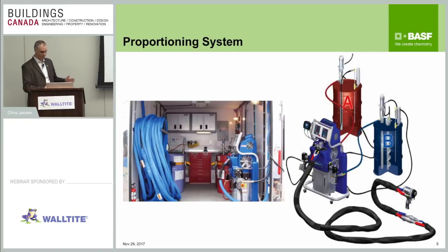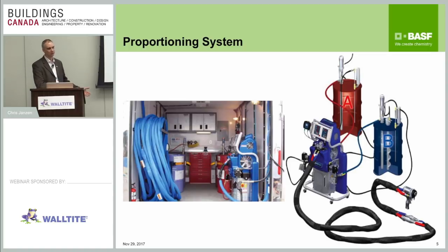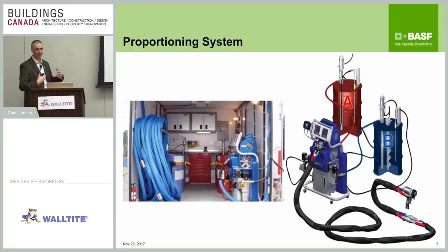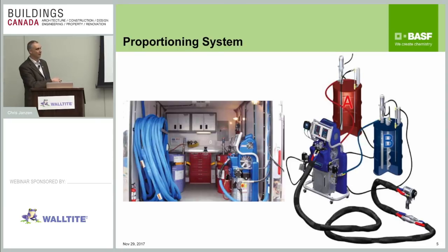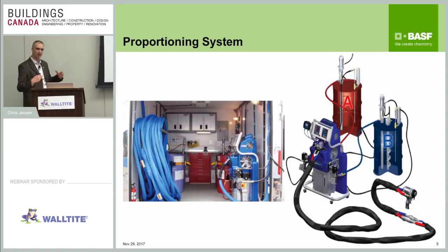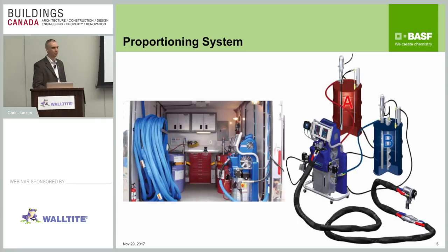Here's an example of the spray foam equipment. It's a highly specialized high-pressure machine that takes the chemical from about 20 degrees Celsius, heats it up to 50 degrees Celsius, and meters it at a one-to-one ratio. There are lots of sensors that will shut everything down if it ever goes off-ratio or if there's a supply problem, so you're not making off-ratio foam on the job site. The two components are sent through two individual hoses up to the spray gun, where the actual mixing occurs through an impingement mixer at about 1,000 PSI. The reaction takes place in about five seconds on the wall.